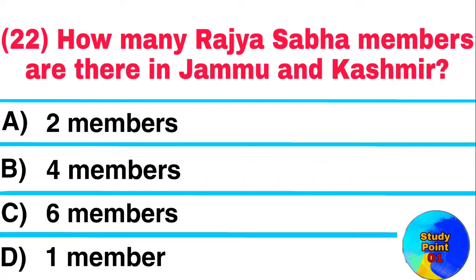Question: How many Rajya Sabha members are there in Jammu and Kashmir? Answer: Four members.